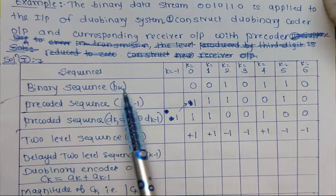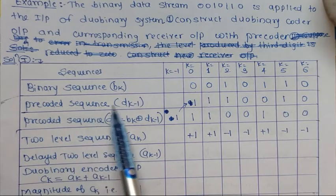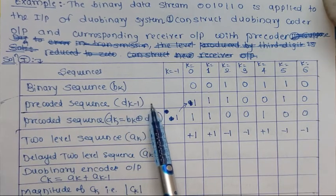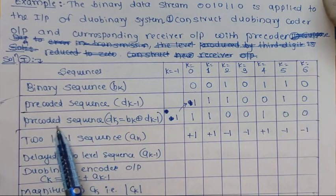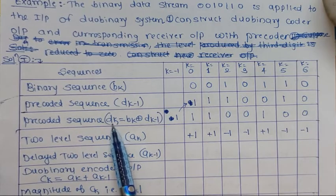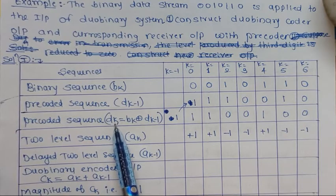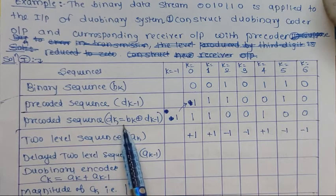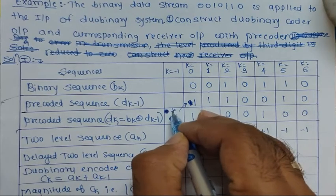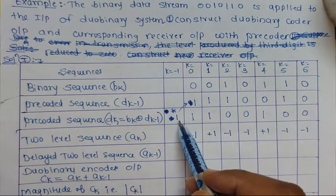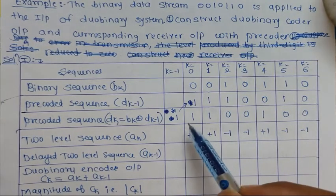The next step is to write the precoded sequence dk. dk is the output of an XOR gate. Initially we need to consider an assumed value — I have considered it as one (marked with a star). You may consider zero and will get the same answer. The delayed version dk minus one is also needed.